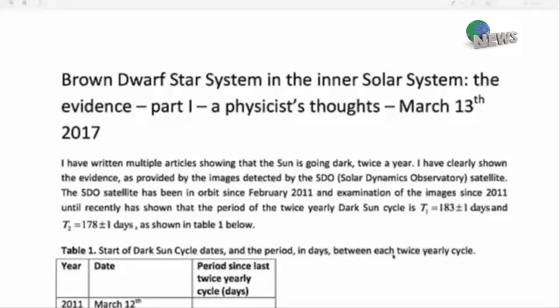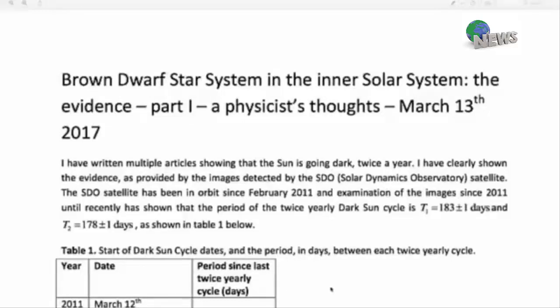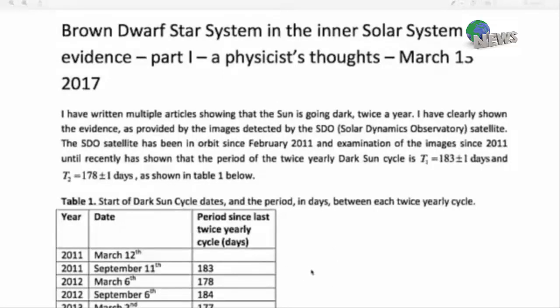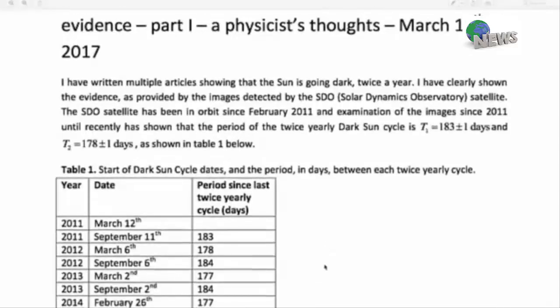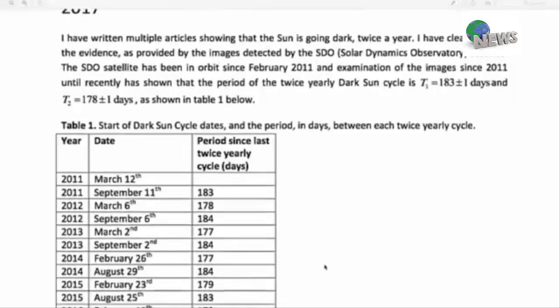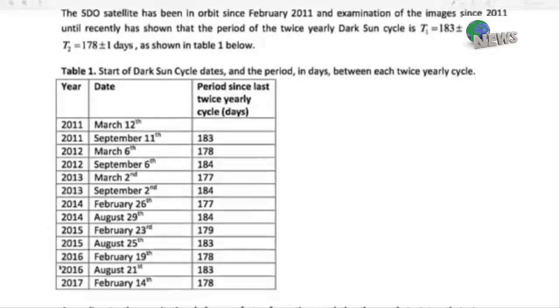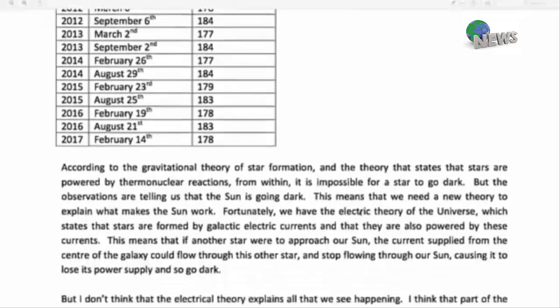Let's get on to the brown dwarf system. This physicist is making the case that the brown dwarf system is in the inner solar system. I've written multiple articles showing that the sun is going dark twice a year. I've clearly shown the evidence provided in the images detected by the Solar Dynamics Observatory satellite. The SDO satellite has been in orbit since February 2011, and examination of the images from 2011 until recently has shown that the period of twice yearly dark sun cycle is T1 equals 130 plus or minus one day and T2 equals 178 plus or minus one day as shown in table one. So what we're seeing is a dark sun start cycle dates and the period of days in between each cycle. You can take notes on this, stop it, and go test our theory and look at the images yourself from the SDO satellite.